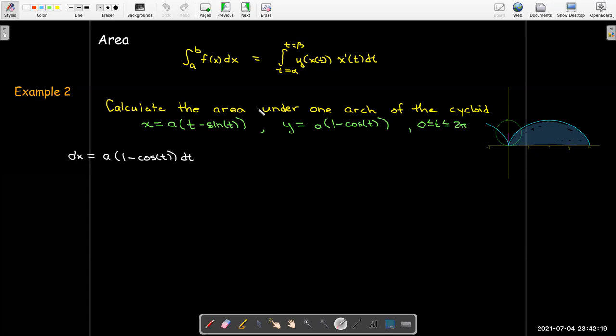Well, my dx, if I just take the derivative or x prime of t, I will find that it's 1 minus cosine of t dt. And so my integral for the area is going to be the integral from 0 to 2 pi, y, which is a parentheses 1 minus cosine of t, times x prime of t dt.